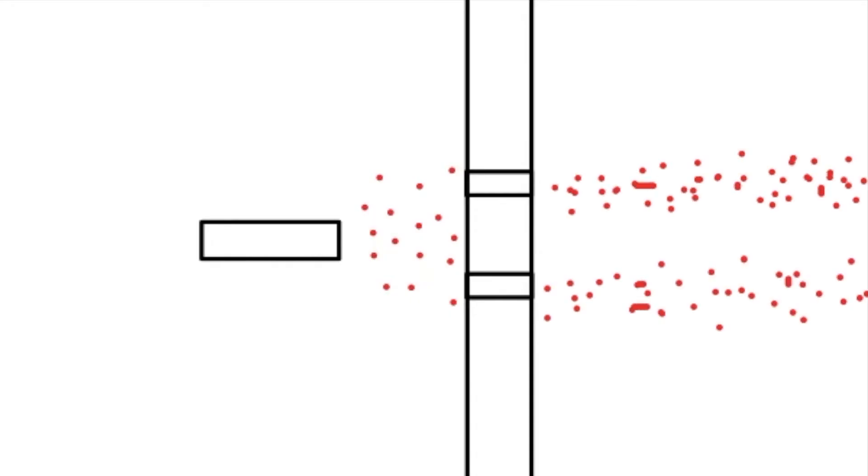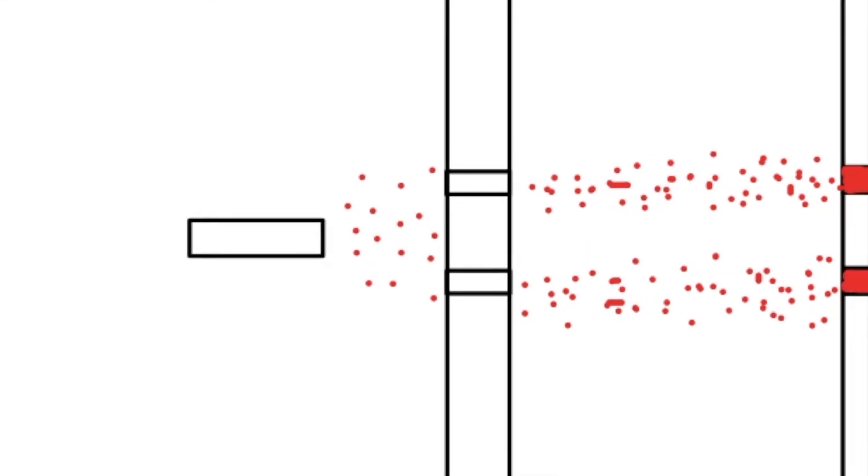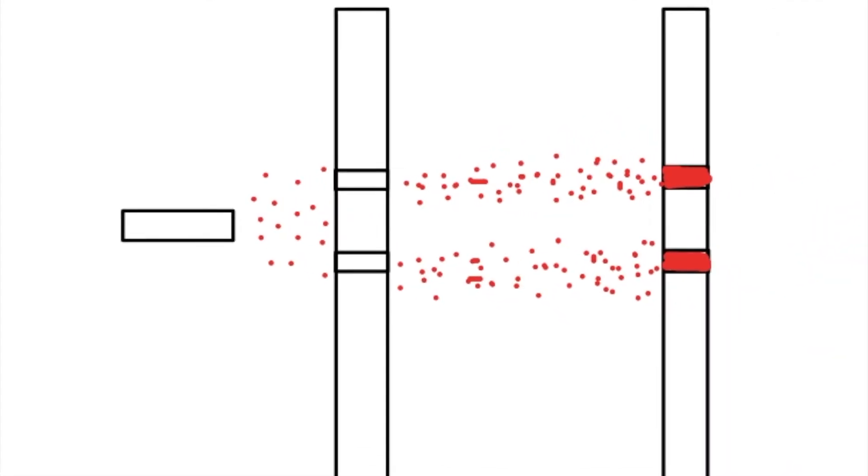But why does it form such a pattern when it should just have two dots from the two slits? Let me tell you what's happening here. I have explained this in one of my previous videos but I will go with this again. Now you would expect to see something like this if light was a particle, but on the wall we see something like this.